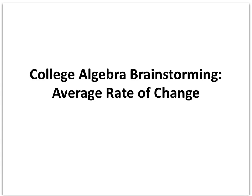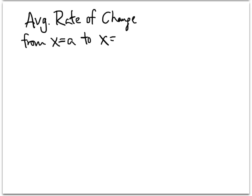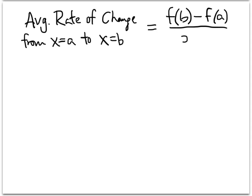In this video, we'll learn about how to compute the average rate of change of a function. The definition of the average rate of change is really just a formula that we have to remember. When we're asked for the average rate of change, we'll always be given two points — from x equals a to x equals b — and we compute f(b) minus f(a) divided by b minus a.